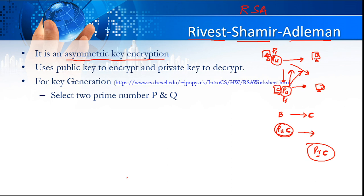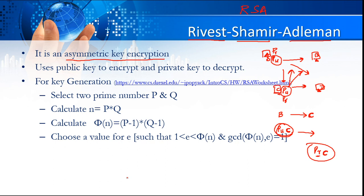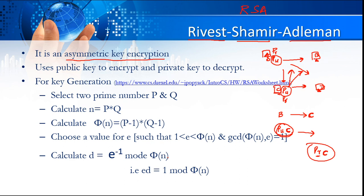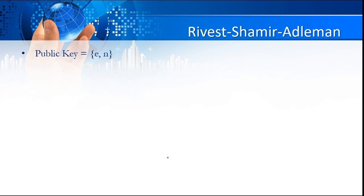So to generate the key: first choose two prime numbers P and Q; then calculate N; then calculate phi(N); then choose a value of E where E is greater than 1 and less than phi(N), and GCD(phi(N), E) equals 1; and then calculate D = E⁻¹ mod phi(N). The public key value is (E, N) and the private key value is (D, N).